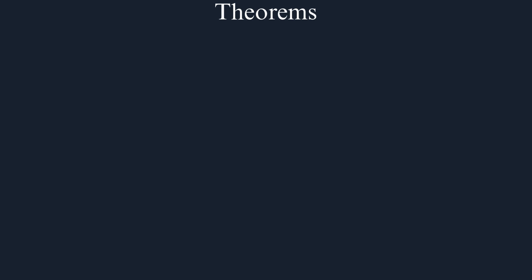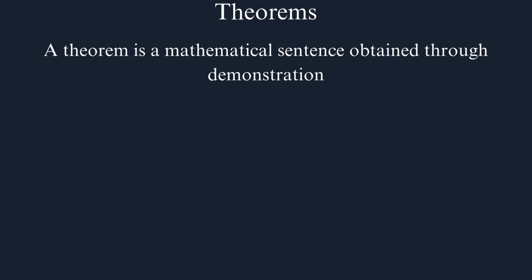Theorems. Now let's get to the famous theorems. A theorem is a mathematical sentence obtained through demonstration. So from the moment you have primitive concepts, definitions, and axioms, you can elaborate theorems, which are sentences you obtain through demonstration, that is, through logical deduction. Examples of theorems: The set of prime numbers is infinite. The Pythagorean theorem.